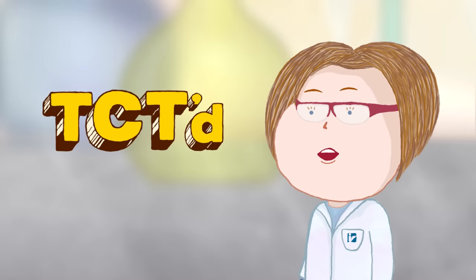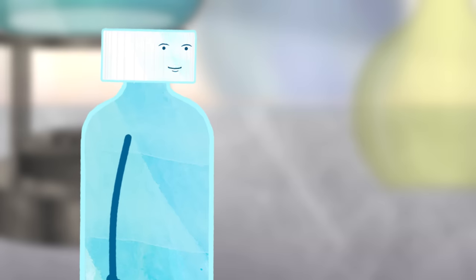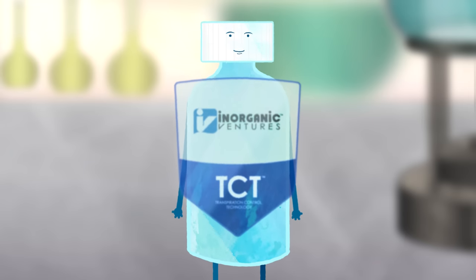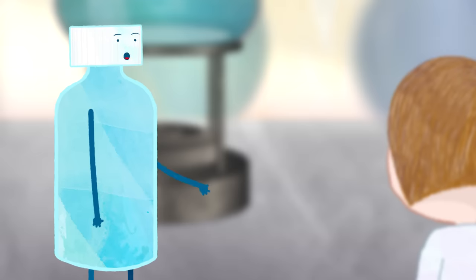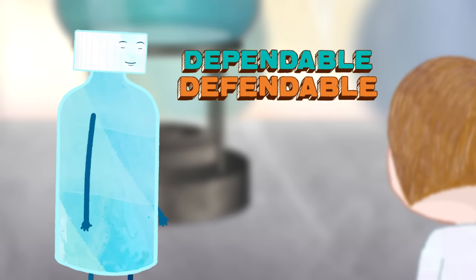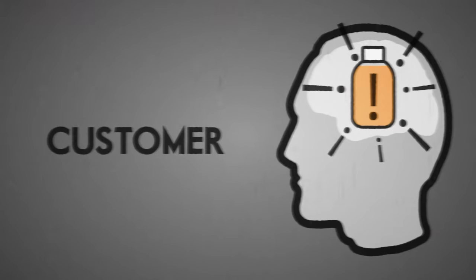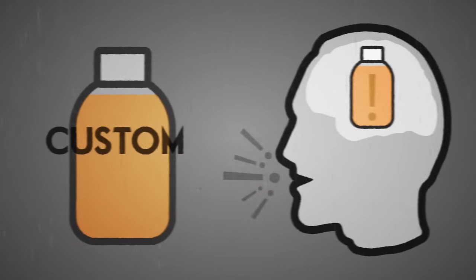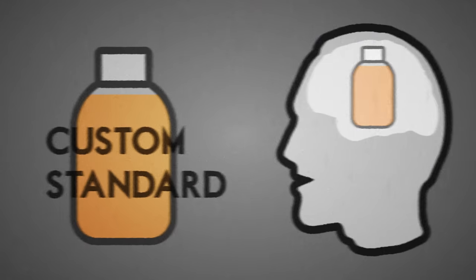TCT'd? What do you mean? It's the goal of every custom standard, Molly. TCT'd means that I get to wear the armor of the TCT Shield from Inorganic Ventures. It means I'm dependable and defendable. It all starts with a customer idea. They ask Inorganic Ventures for a specific custom standard, and then the big brains hit the lab.